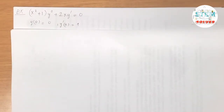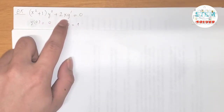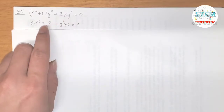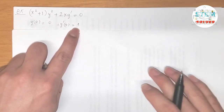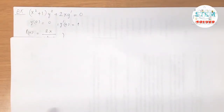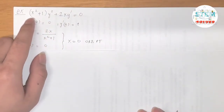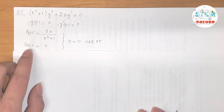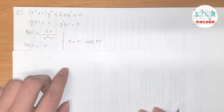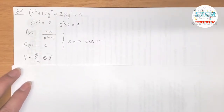Using the power series method to solve the differential equation (x² + 1)y'' + 2x·y' = 0, with y(0) = 0 and y'(0) = 1. First, let's find p(x) and q(x). So p(x) = 2x/(x² + 1) — don't forget to divide by the lead coefficient — and q(x) = 0. You can see that x = 0 is an ordinary point.